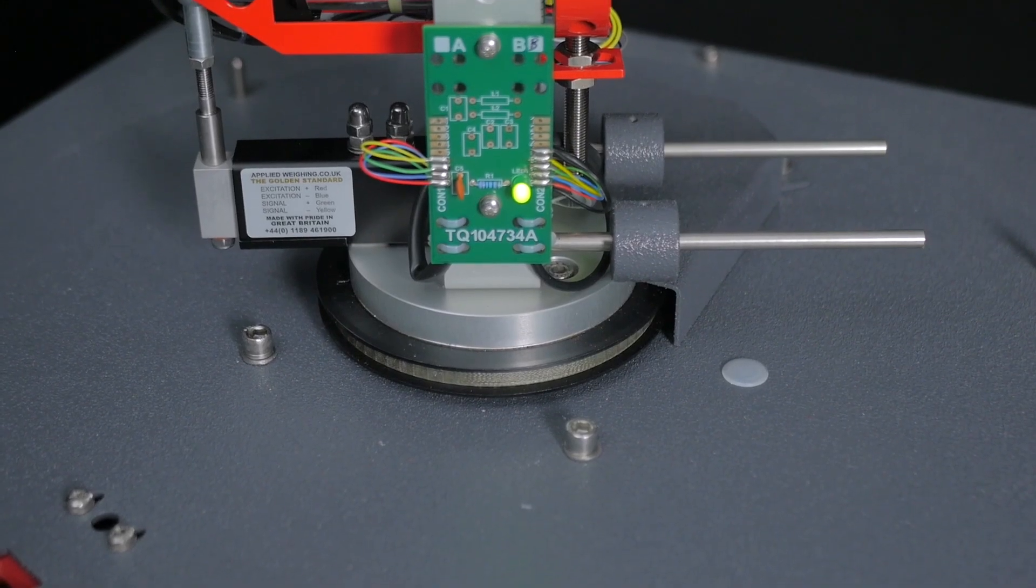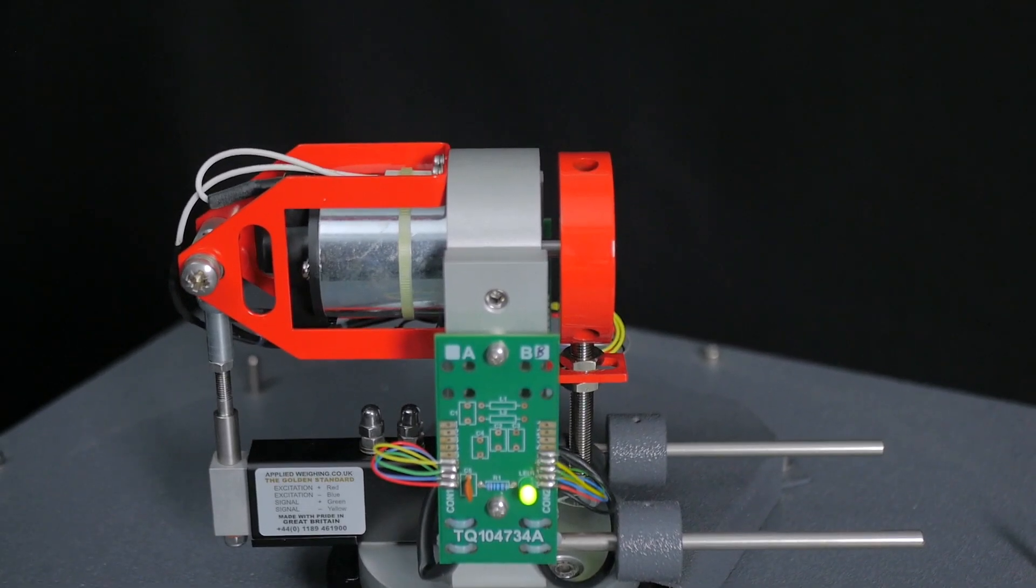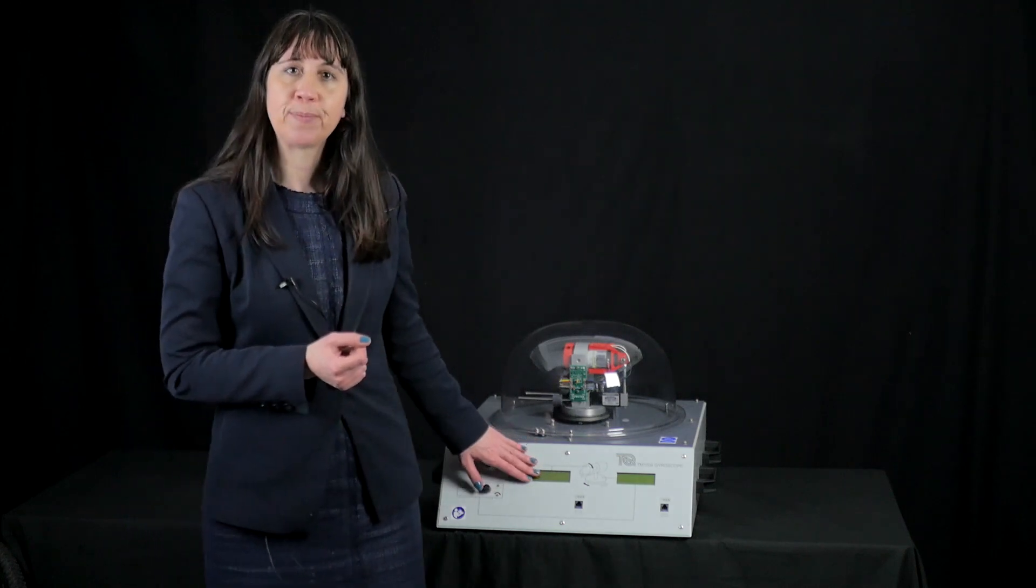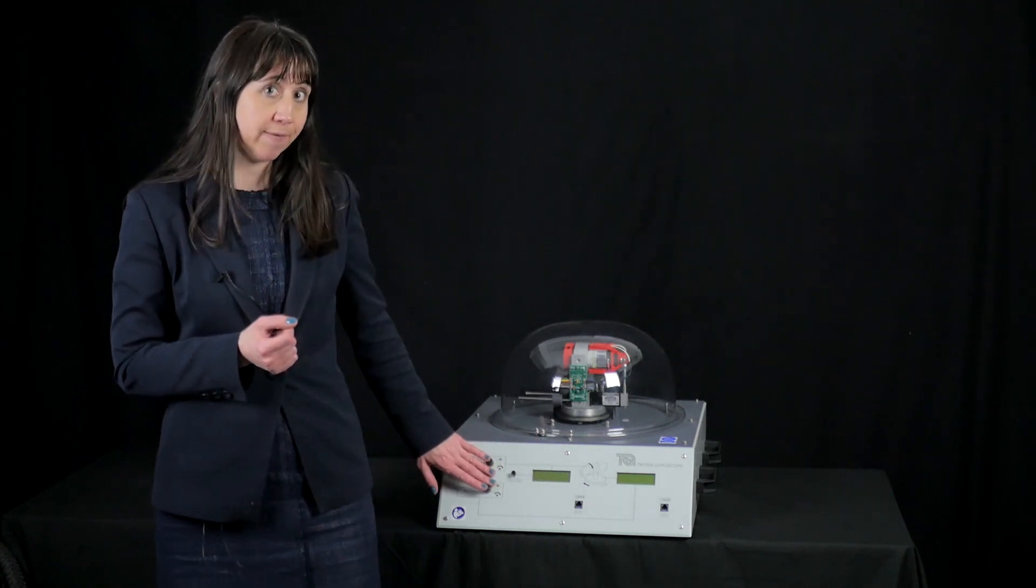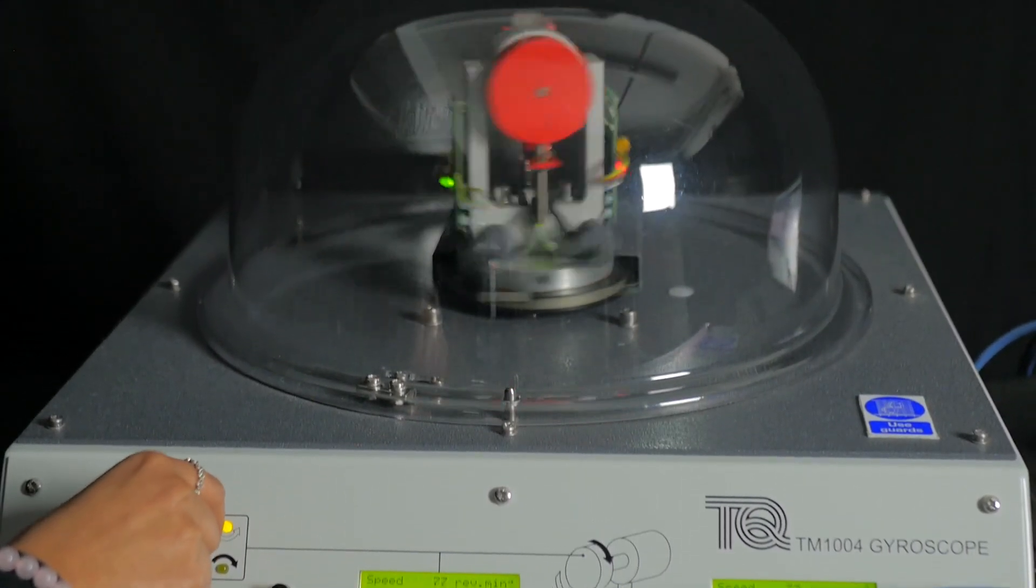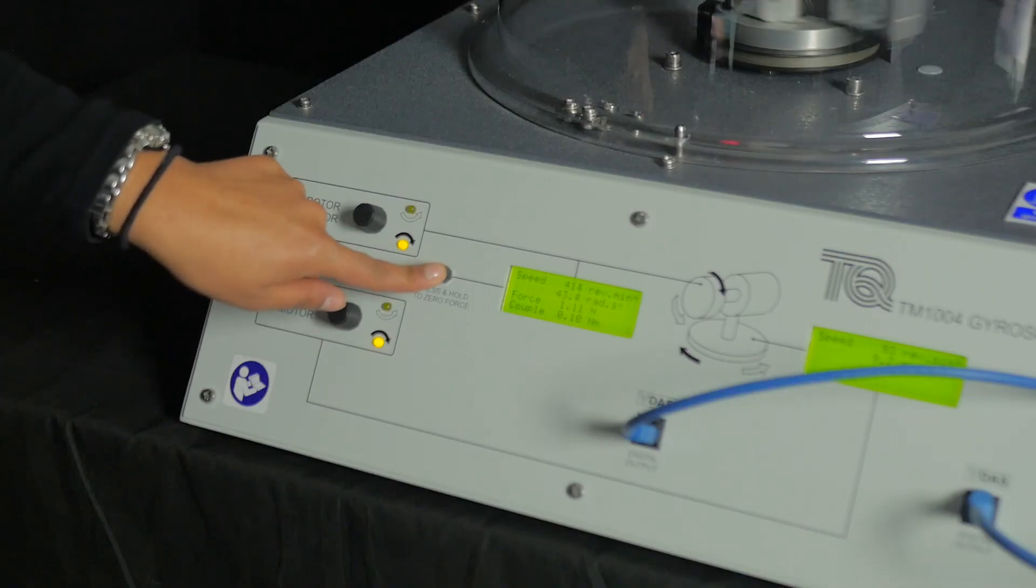Over here there are counterweights fitted on the gimbal to balance the gyroscope. The base unit, as well as housing the displays, has three controls: two that control the velocities of the motor and the precession motor, both in clockwise and anti-clockwise direction, and another which is the tare button for allowing you to zero the reading from the force sensor before each experiment.